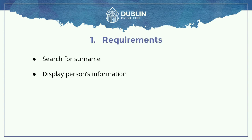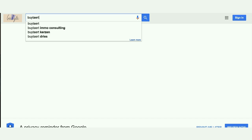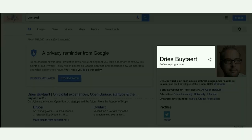Let's create a simple requirement: we want to search for a surname and display a person's information. To write manual tests is quite easy. We go to a search engine, type a surname into the search box, and check for the results in the right-hand side area. Type a particular last name and we see the details on the right-hand side. You can do that with movies as well, and music.